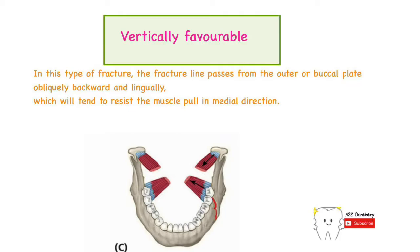In a vertically favorable fracture, the fracture line passes from the outer buccal plate and passes obliquely backwards and lingually. This direction of the fracture line tends to resist the muscle pull in the medial direction. The muscle pull is mainly due to the medial pterygoid and lateral pterygoid, and this pull will prevent the medial displacement of the proximal segment.